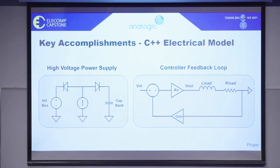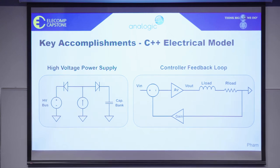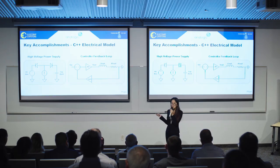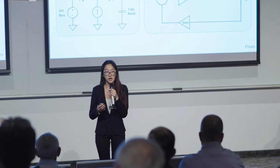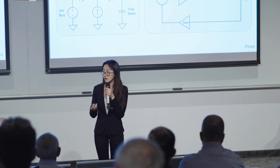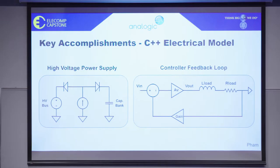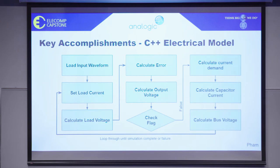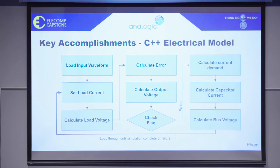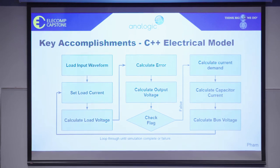The first step we took toward the anticipated best outcome was to develop the electrical model. We were given an LTSpice file which simulated aspects of the gradient amplifier such as the high-voltage power supply and the controller feedback loop. Using the LTSpice file, we derived mathematical equations describing the electrical behavior of the gradient amplifier, and then created a C++ program which is the electrical model. We chose C++ because it allows us to develop models that are efficient in runtime and processing, and it is also compile-based, which aids in the encryption aspect of the project.